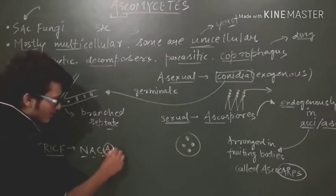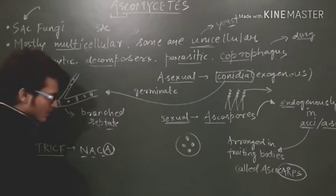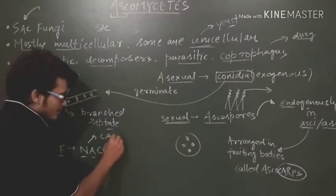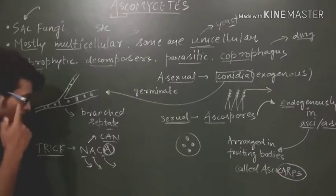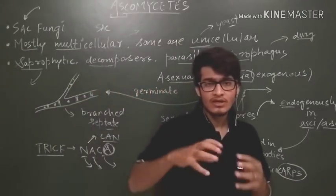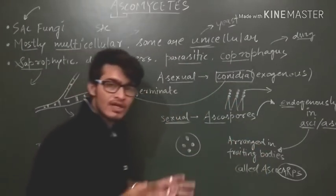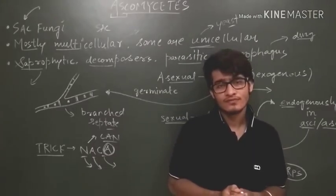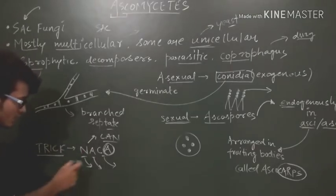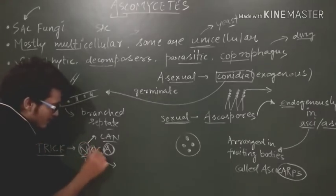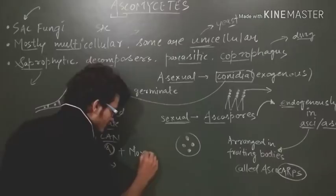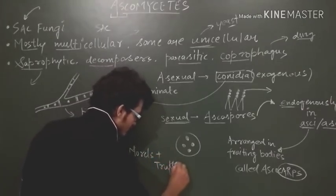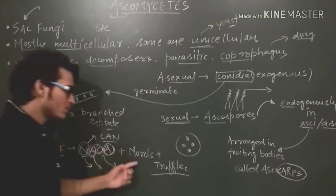Now let's talk about a trick to memorize the examples. You can pronounce it like NASA so it will be easier to memorize, where A simply means Ascomycetes. Or you can use CAN as a trick. N for Neurospora, A for Aspergillus, and then Claviceps. Neurospora is known as the experimental model - why? Because it is quite simple and used a lot in genetic studies. So it's the Drosophila of plant kingdom and this question is very important. Then there is Aspergillus, Claviceps, Penicillium, and yeast. There are some edible fungi also - morals and truffles - which are present in this class.